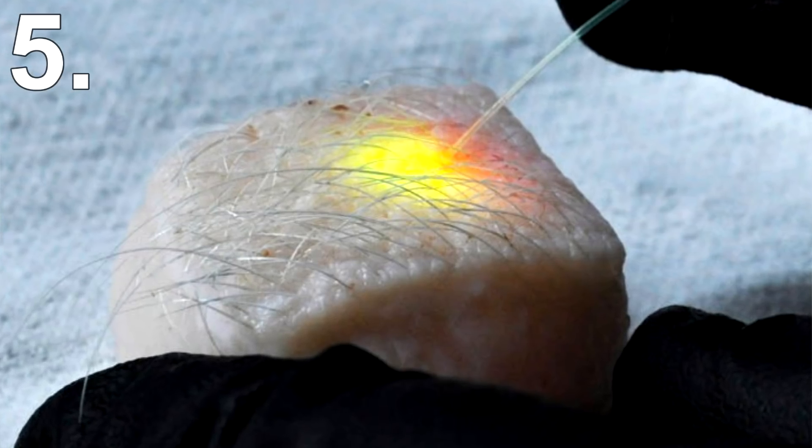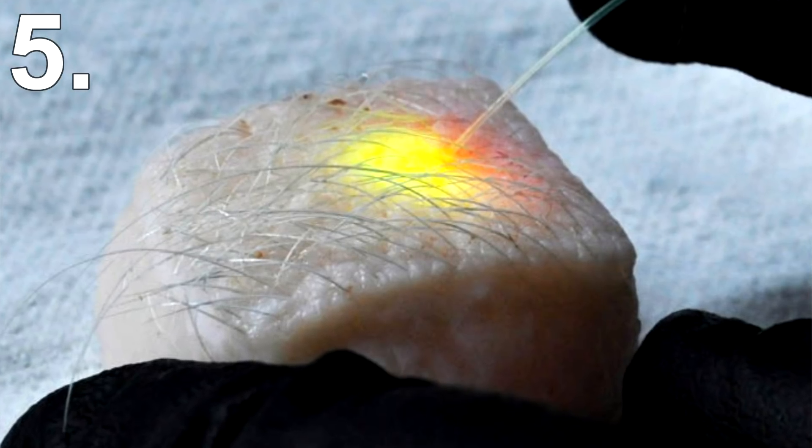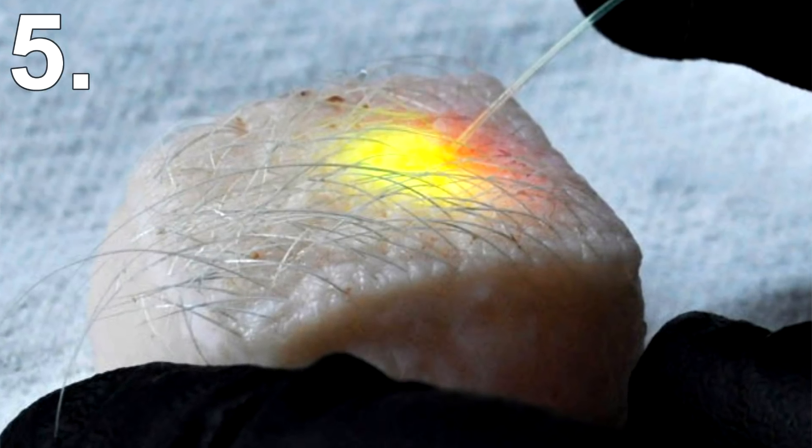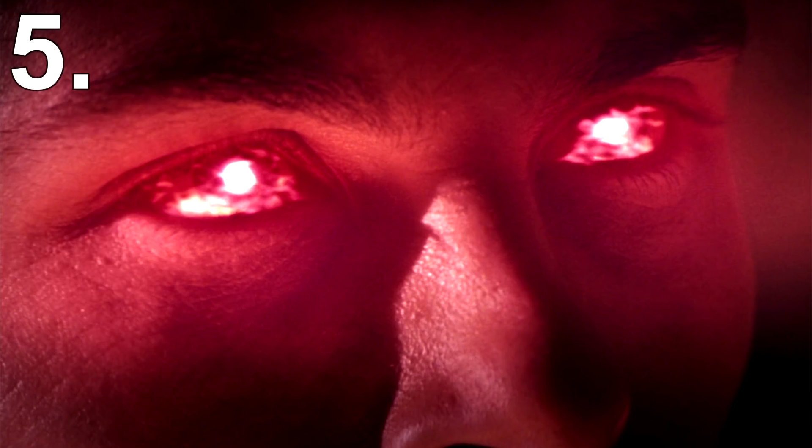Anyway, if you really want Cyclops type powers, you may be in luck. Physicists at Massachusetts General Hospital have successfully altered human cells so they can emit light of their own. This has been done to help track cells during cancer treatment. However, theoretically they could make it so people can shoot beams of light out of their eyes. Sadly, these beams of light would be more like a flashlight than a death ray.